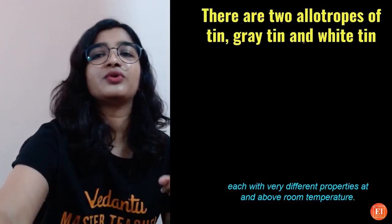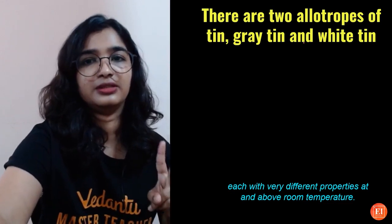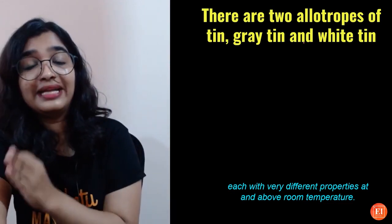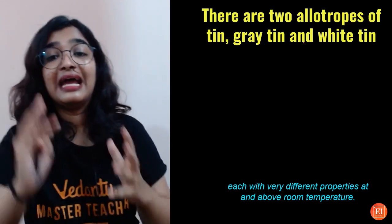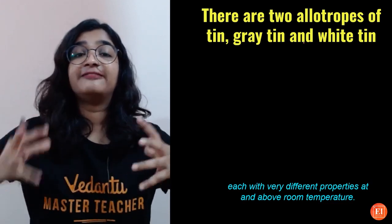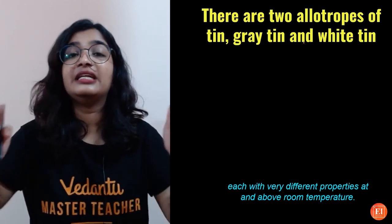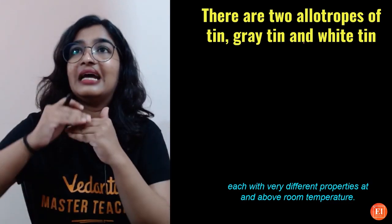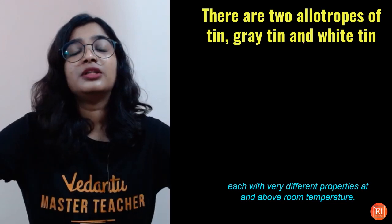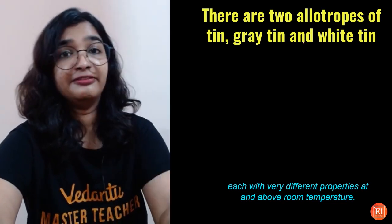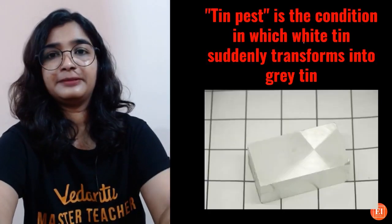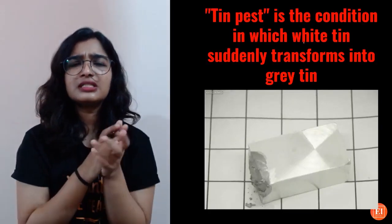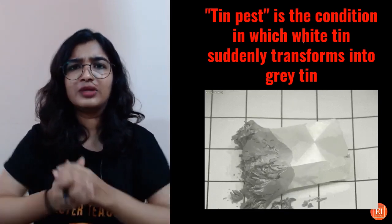Tin has two allotropes: gray tin and white tin. They have very different properties, and above room temperature they behave very differently.